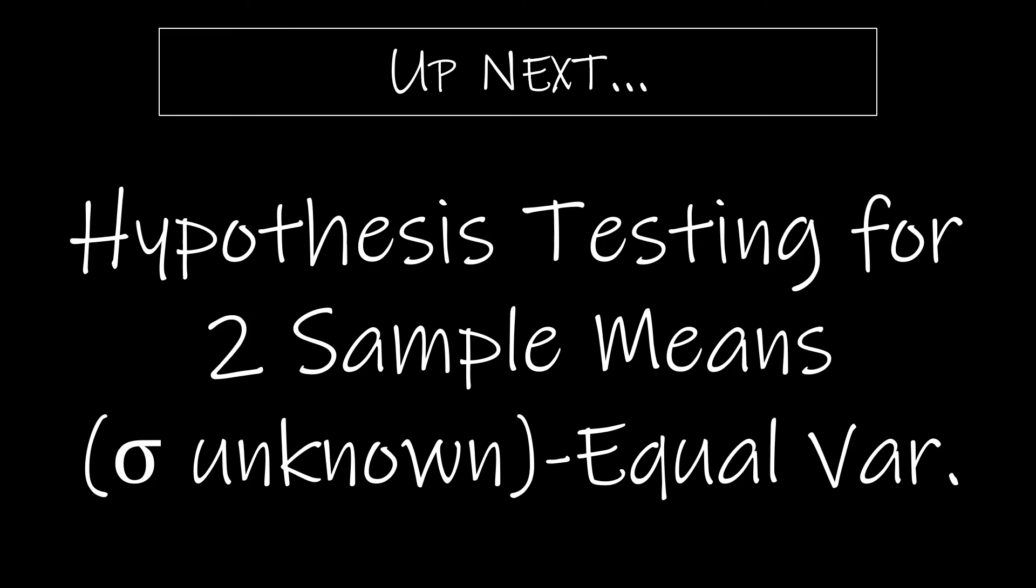Up next, we're going to take a look at hypothesis testing for two sample means, where sigma is unknown, and in this case we'll look at equal variances.